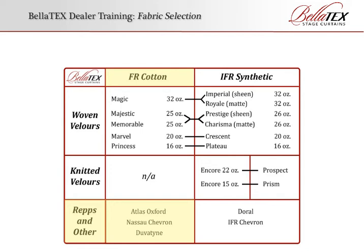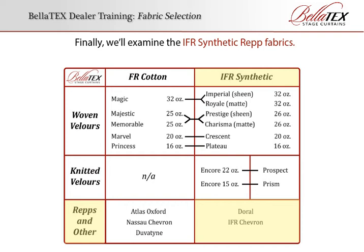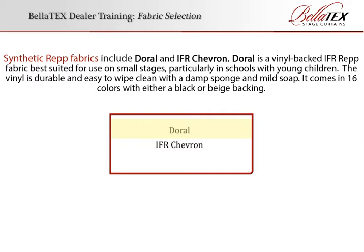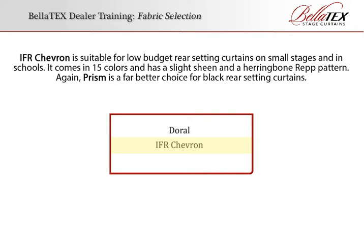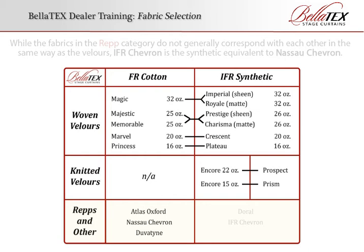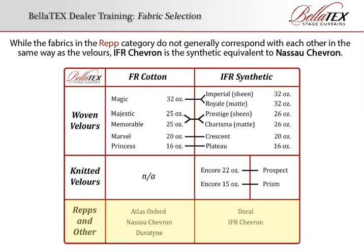Finally, we'll examine the IFR synthetic rep fabrics. Synthetic rep fabrics include Dural and IFR Chevron. Dural is a vinyl-backed IFR rep fabric best suited for use on small stages, particularly in schools with young children. The vinyl is durable and easy to wipe clean with a damp sponge and mild soap; it comes in 16 colors with either a black or beige backing. IFR Chevron is suitable for low-budget rear setting curtains on small stages and in schools, comes in 15 colors, and has a slight sheen and herringbone rep pattern. Again, Prism is a far better choice for black rear setting curtains. IFR Chevron is the synthetic equivalent to Nassau Chevron.